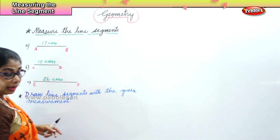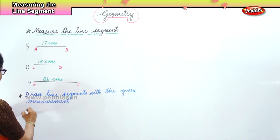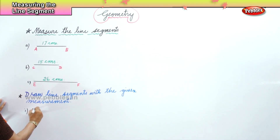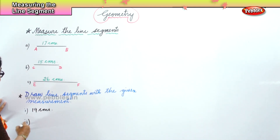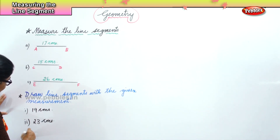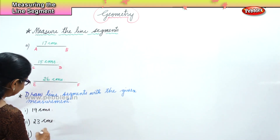I am giving you three measurements. A: you draw a line segment of length nineteen centimeters. Another one: you draw a line segment of twenty-three centimeters. And third: you draw a line segment of twenty-nine centimeters.